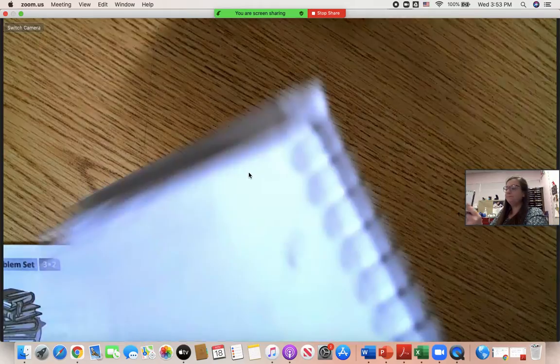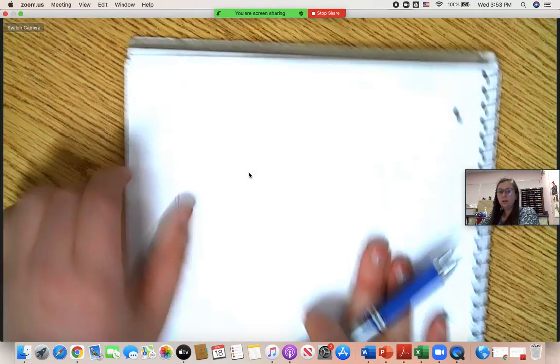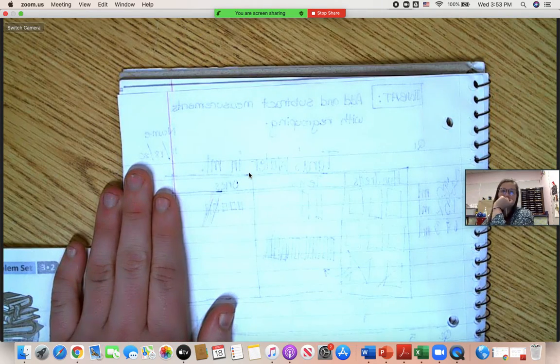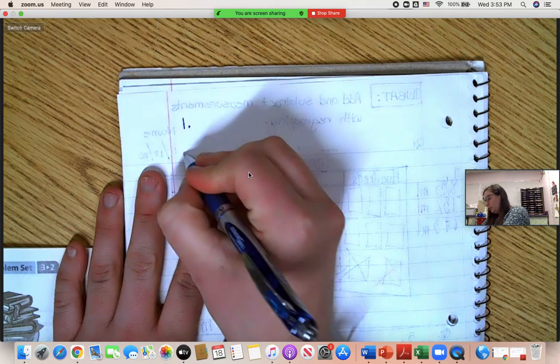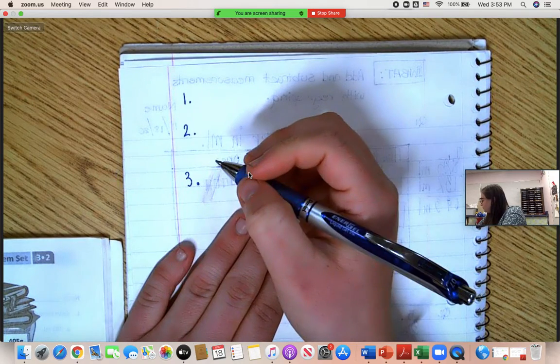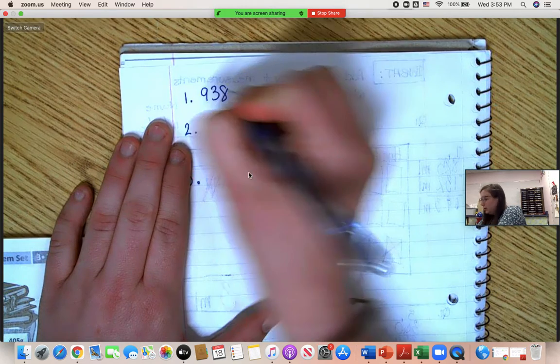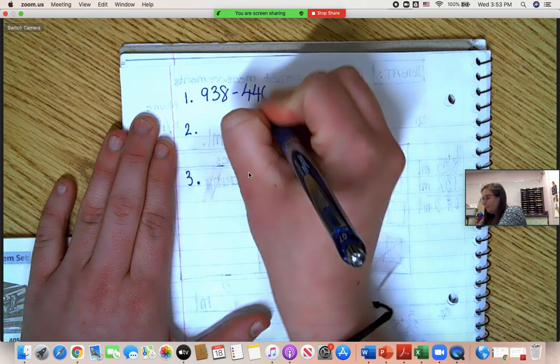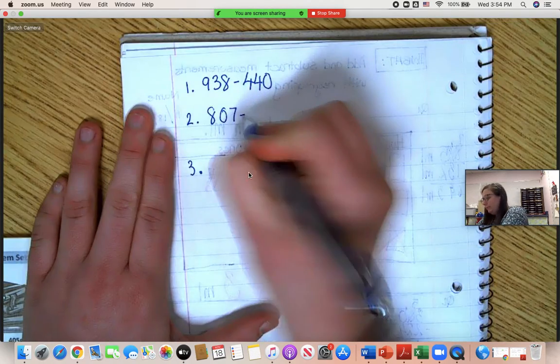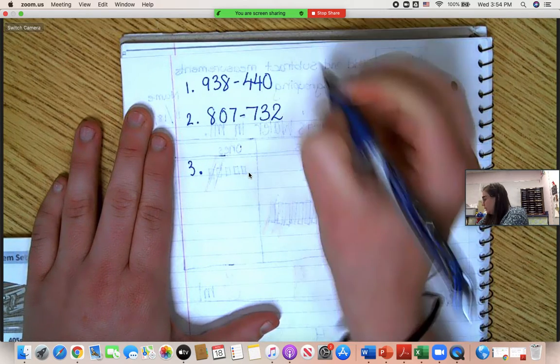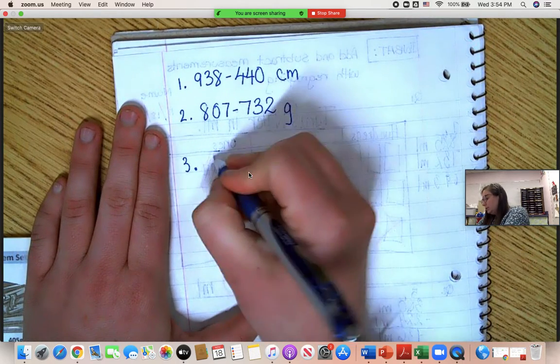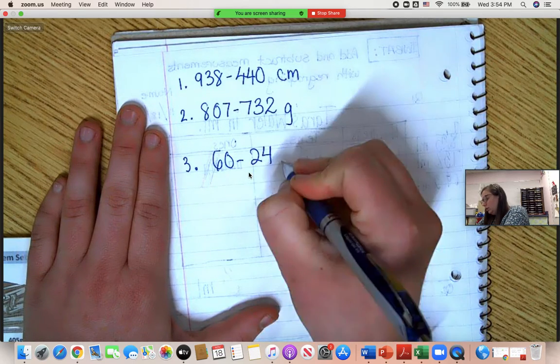All right. Go ahead and go to the back page. And this one is your practice problem. I'm going to give you three practice problems. One, two, three. Problem one. Nine hundred thirty-eight minus four hundred forty. Number two, eight hundred and seven minus seven thirty-two. Oh, and then this one was centimeters, and this one is grams. Okay. And number three will go sixty minus twenty-four milliliters.